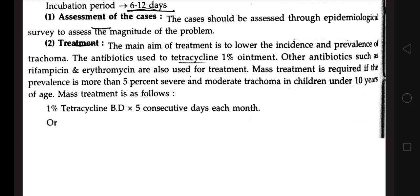For treatment, antibiotics used include tetracycline 1% ointment; rifampicin and erythromycin can also be used. Mass treatment is indicated when more than 5% of severe and moderate trachoma cases are present in children under 10 years of age in a particular area.